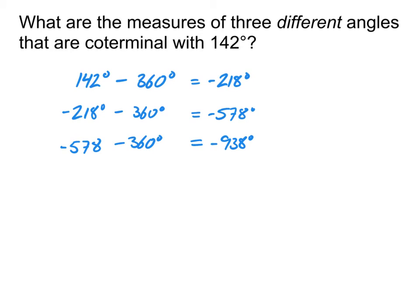And so all of those would also be coterminal with 142 degrees. You can also mix and match them. You could subtract 360 one time, you could add 360 another time, as long as you come up with three different angles from each other and from the original.